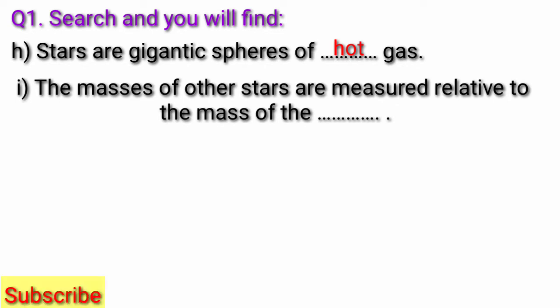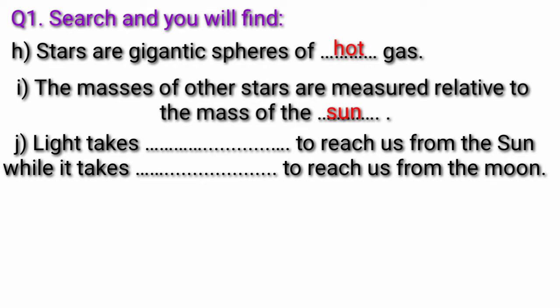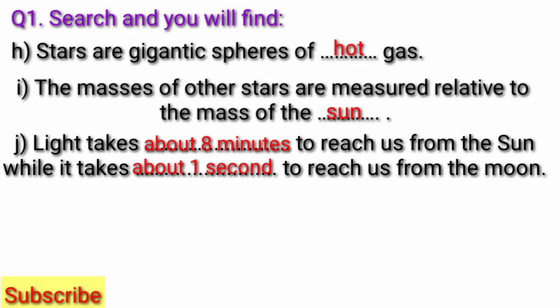Question I, the masses of other stars are measured relative to the mass of the fill in the blank. Answer, the masses of other stars are measured relative to the mass of the sun. Question J, light takes fill in the blank to reach us from the sun, while it takes fill in the blank to reach us from the moon. Answer, light takes about eight minutes to reach us from the sun, while it takes about one second to reach us from the moon.